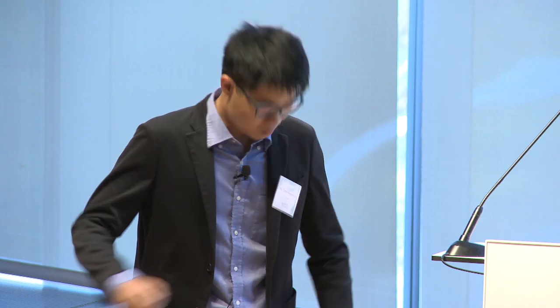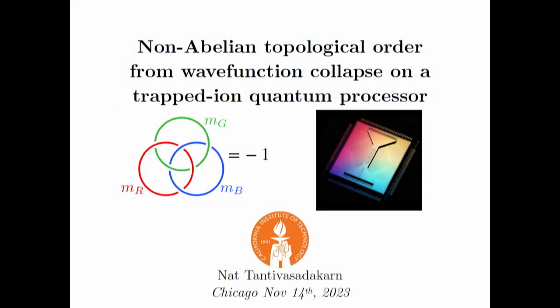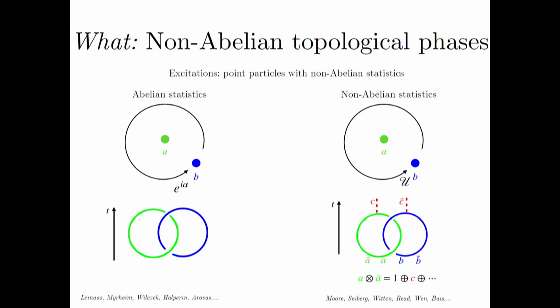What is a non-abelian topological phase? These are phases of matter that exhibit excitations called non-abelian anyons. To start, abelian anyons: take two particles A and B, move one around the other, and you accrue an anyonic phase in a way that generalizes bosons and fermions — you might accrue a phase e^{i alpha}. If you think of it as a process in time, you can think of creating two particles, linking them together in spacetime, and getting some phase factor.